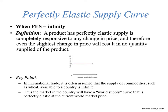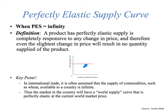Let's look at the two special cases. When price elasticity of supply is perfectly elastic, PES equals infinity. That means a product is completely responsive to any change in price, and even the slightest change in price will result in no quantity supplied. Looking at the diagram here, you get a supply curve that's perfectly horizontal. One student reminded me: E for elastic, horizontal — so you don't get it flipped with inelastic. If the price changes at all, none of the product will be supplied.